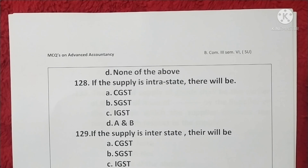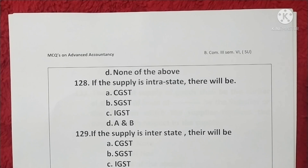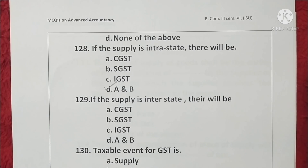Question 128. If the supply is intrastate, there will be CGST and SGST — option D, A and B, is correct. Question 129. If the supply is interstate, there will be IGST — Integrated Goods and Services Tax. Option C is correct.